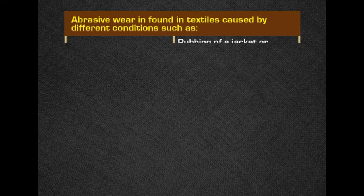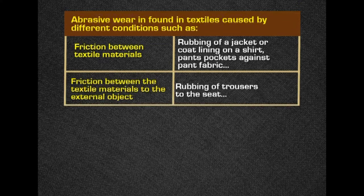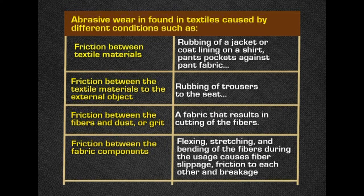There are different conditions where abrasiveness is caused on fabrics. The first is friction between textile materials, such as when a jacket lining rubs against a shirt, or a pant pocket rubs against the pant fabric. Friction also occurs between textile and external objects, such as trousers rubbing against a seat. Within the fabric, friction occurs between fibers due to dust or grit cutting the fibers, and friction from bending, flexing, and stretching leads to fiber slippage and eventually yarn breakage.